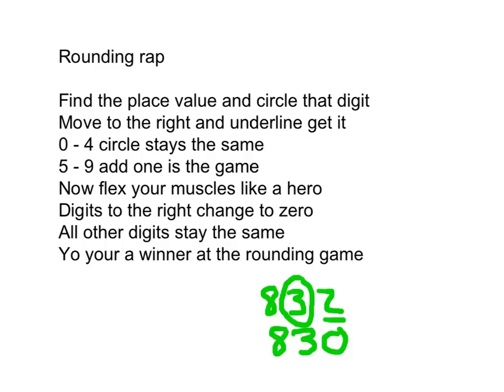Let's say the rounding wrap together. Rounding wrap: find the place value and circle that digit. Move to the right and underline, get it. 0 to 4, circle stays the same. 5 to 9, add 1 is the game. Now flex your muscles like a hero. Digits to the right change to 0. All other digits stay the same. Yo, you're a winner at the rounding game.